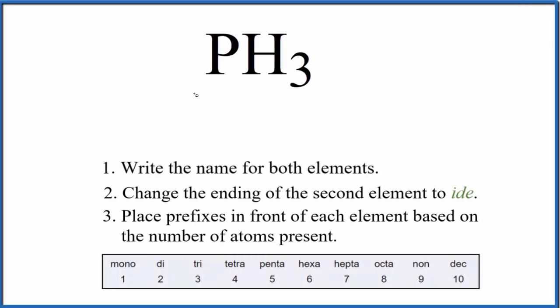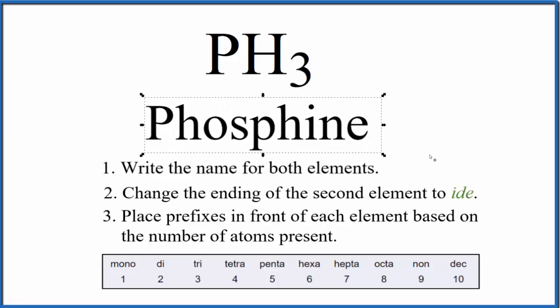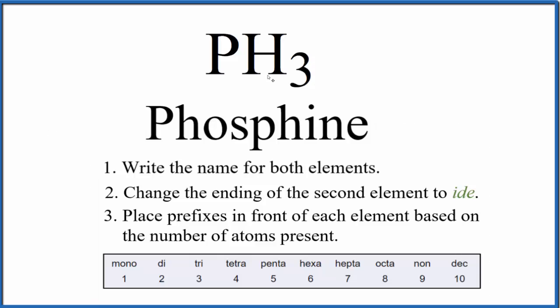In this video we'll write the name for PH₃. PH₃ is often called phosphine, but you really can't figure that out just by looking at the formula here. You'd have to really memorize that. If you're asked to write the name though in a very general chemistry course, they're probably looking for something a little bit different, so we'll use these rules here.